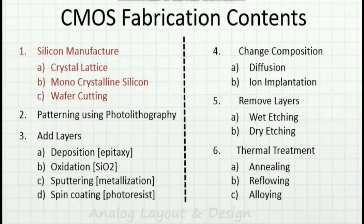Let us look into the contents of the CMOS fabrication process. First we must understand that the entire IC fabrication is done on a silicon wafer. So first we should understand how the wafer is formed — what is the crystal lattice, the difference between monocrystalline and polycrystalline silicon, how the ingot is formed, and how a wafer is arrived at after cutting the ingot.